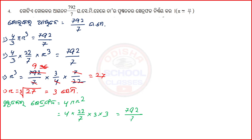Which is equal to 3. So we have 792 × 7, with 173, 1, 2, 7. That's the answer. Number 4 is done.